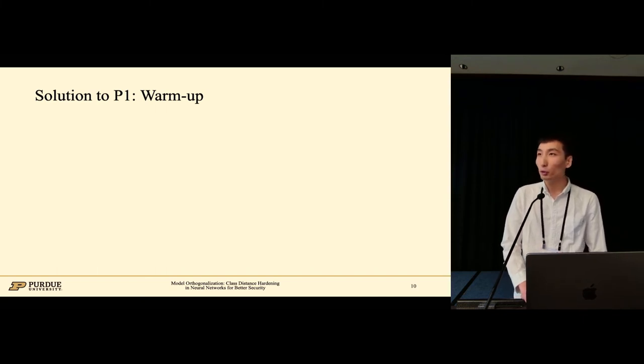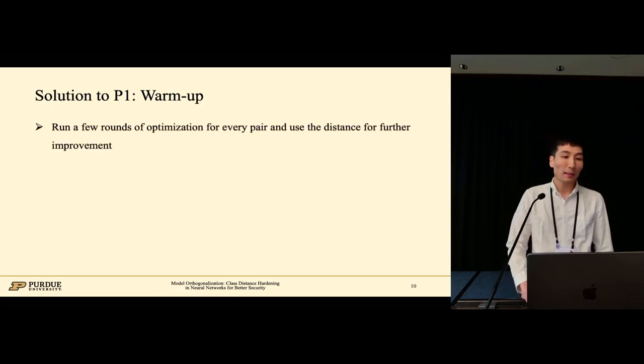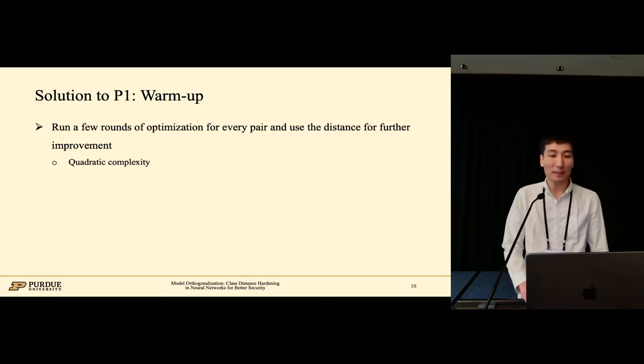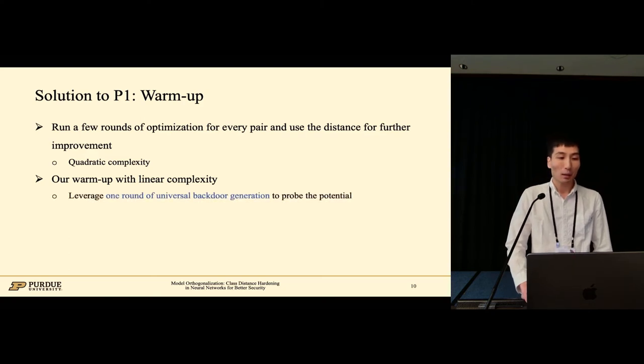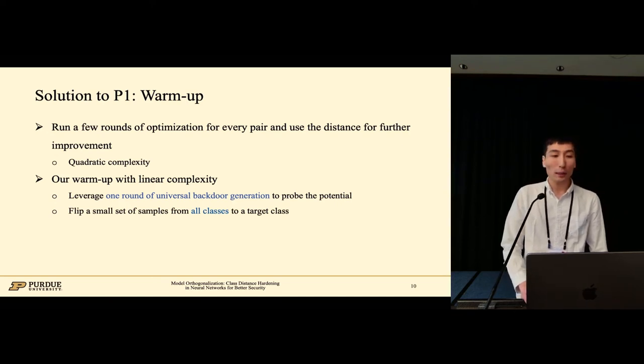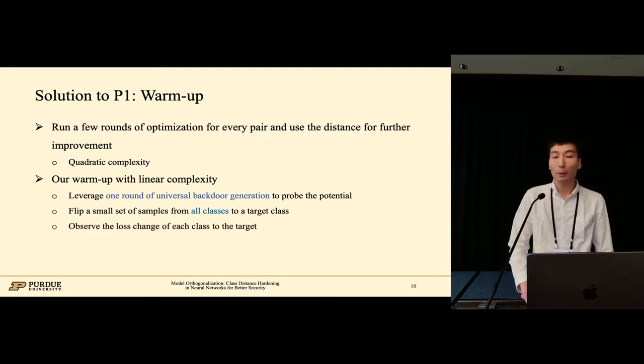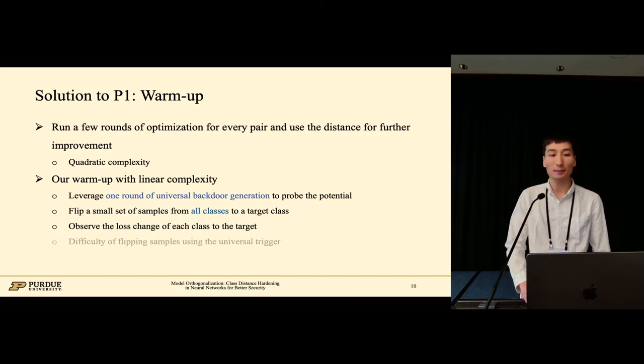At the beginning of training, we have no idea which pair is promising. A straightforward idea is to run a few rounds of optimization for every pair and use the distance for further improvement, but it is quite expensive. We introduce an approximation with linear complexity. Specifically, we leverage one round of universal backdoor generation to probe the potential of each source class. The universal backdoor aims to flip a small set of samples from all classes to a target class. We then observe the loss change of each class to the target. The difficulty of flipping samples using the universal trigger indicates how promising a pair is.